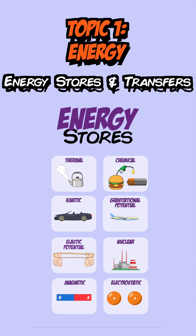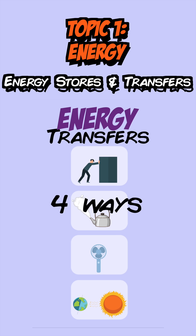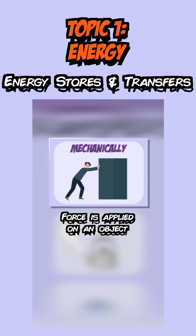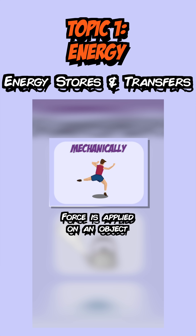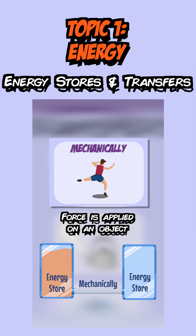Energy always exists in one of these eight stores, but it doesn't just stay there. Energy can be transferred between these stores in four different ways. The first is mechanically, where a force is applied on an object. For example, when a person throws a ball, energy is transferred mechanically from the chemical energy stores of the person — from the food that they eat — to the kinetic energy stores of the ball.